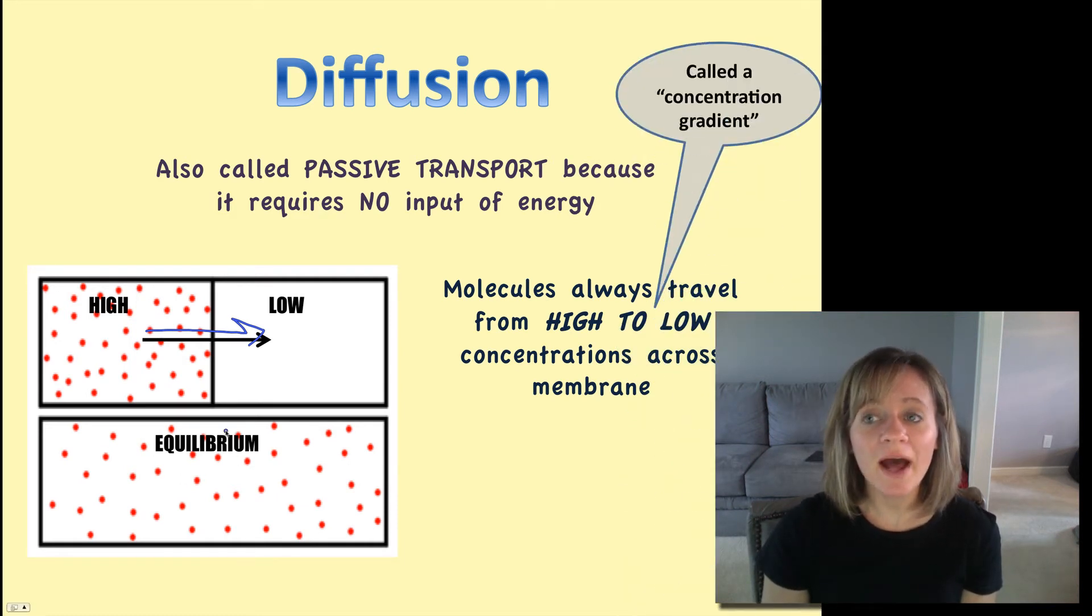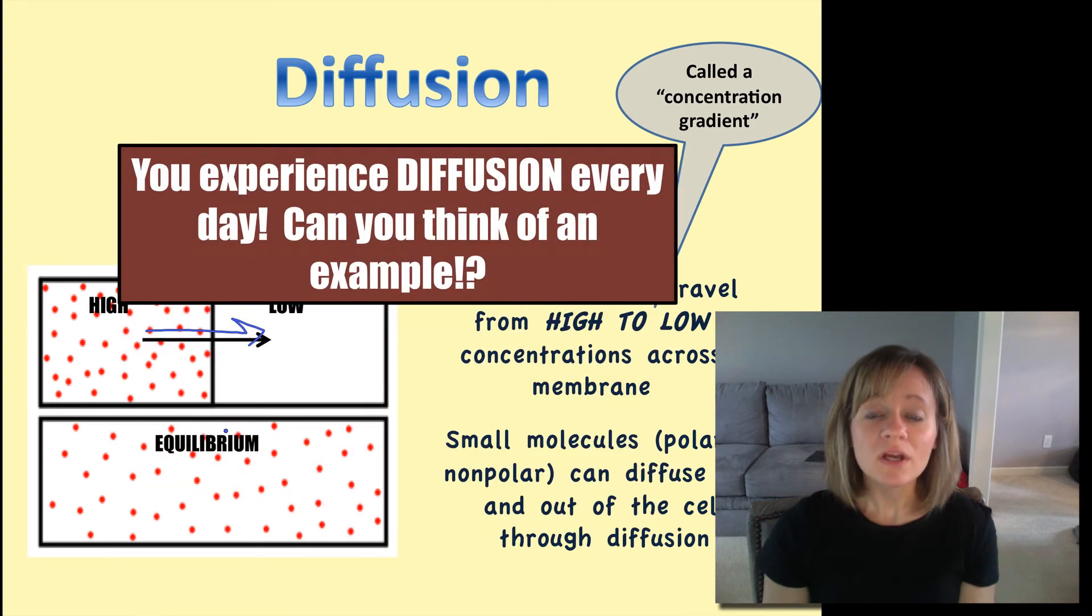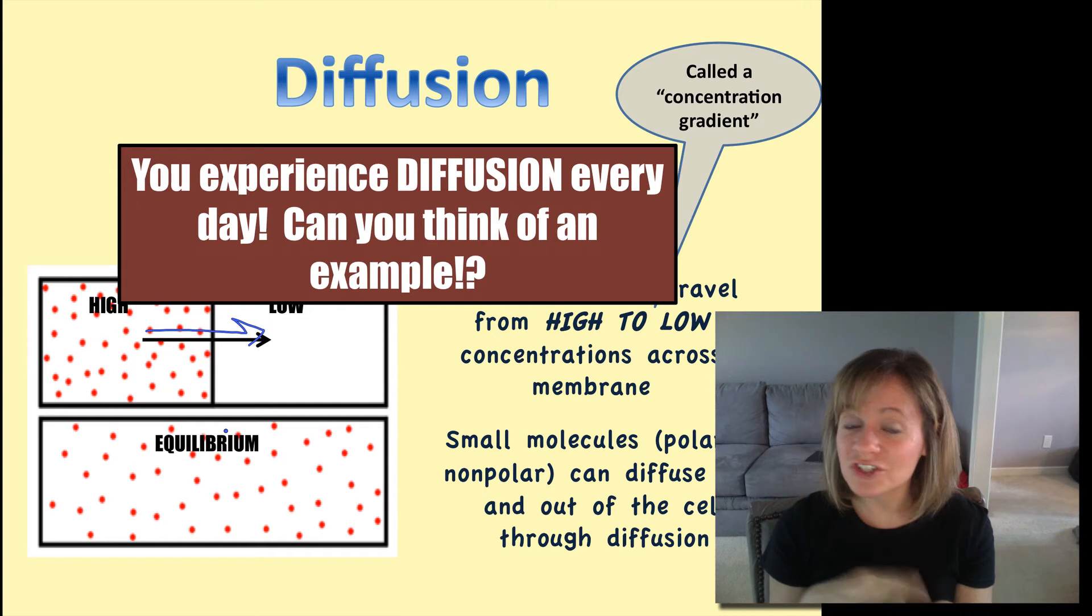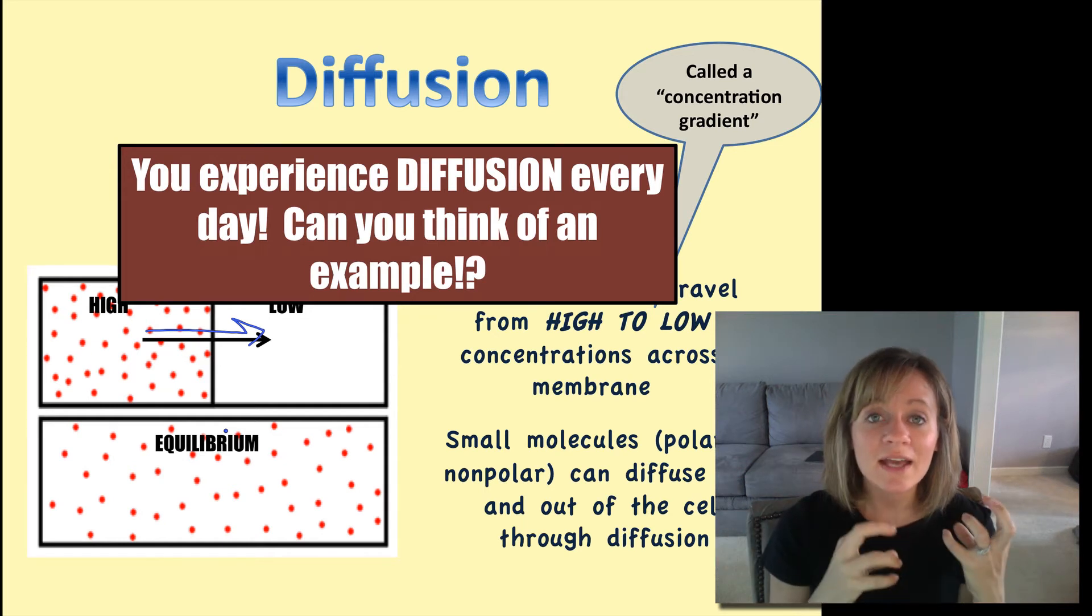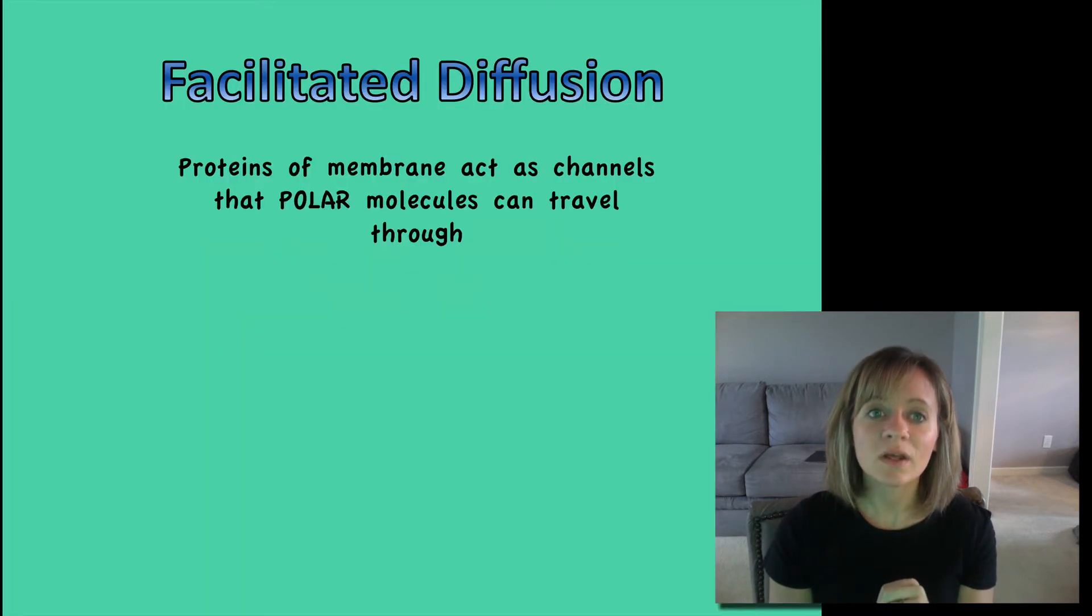So diffusion from high to low, this is called moving down its concentration gradient. No energy required. And again, small molecules like oxygen and carbon dioxide can diffuse from high to low through the cell membrane. You experience diffusion every day. I'm trying to get you to connect to real life here. Can you think of an example where you experience something moving from high to low concentration? Where do you see that? Put that in your notes for me.